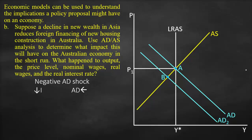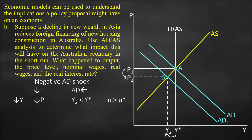We have a new point of intersection between the new aggregate demand curve (AD2) and the short-run aggregate supply curve, which is point B. At this point we have a new output level Y2 and a new price level P2. Our output level dropped and our price level dropped. Y2 is lower than Y-star, which is potential output or full employment output, meaning we are producing less than our potential.